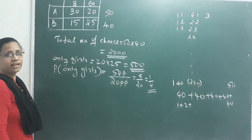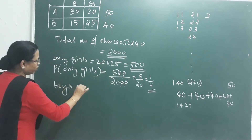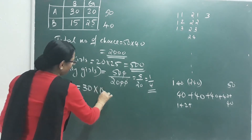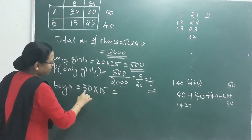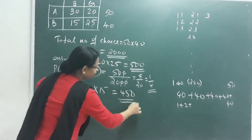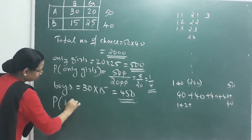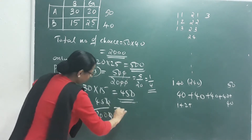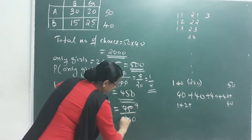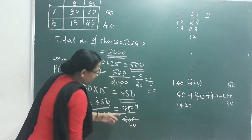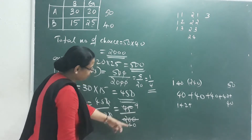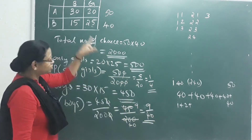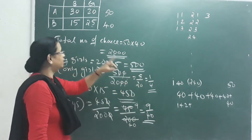The probability of both boys: 30 boys in 10A and 15 boys in 10B gives 450 divided by 2000. Simplifying 450 by 2000: 45 by 200, then 9 by 40. So the probability of both being boys is 9 by 40.